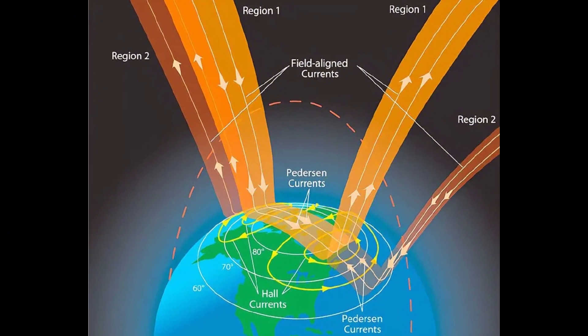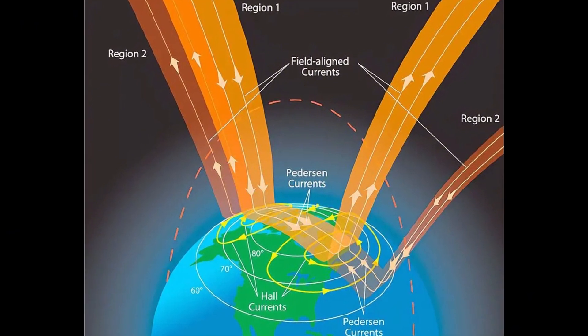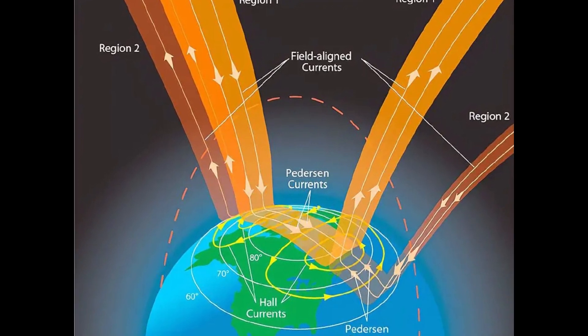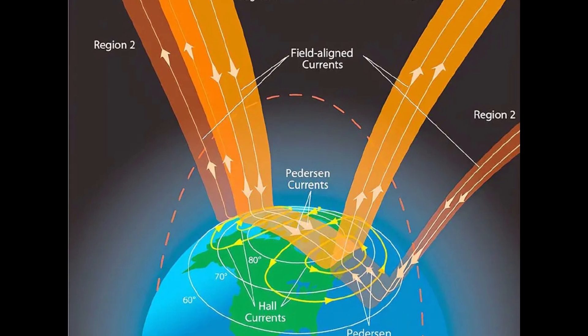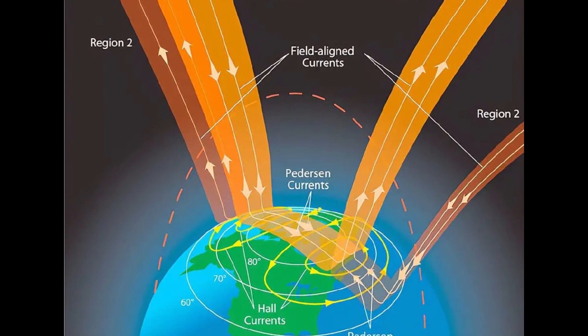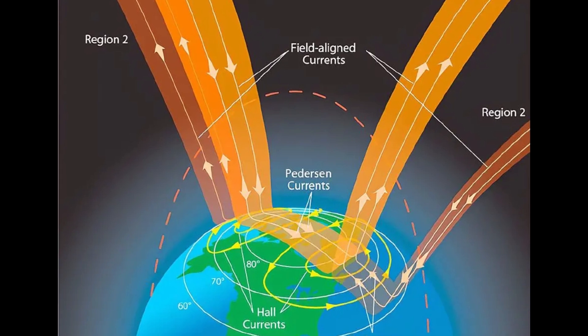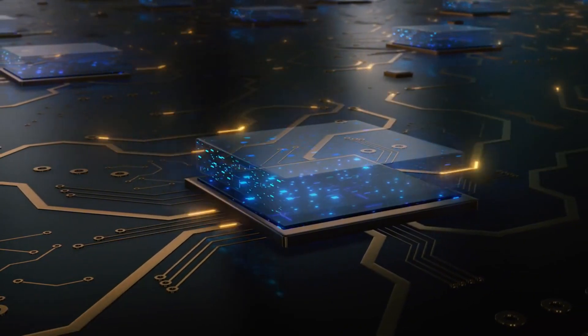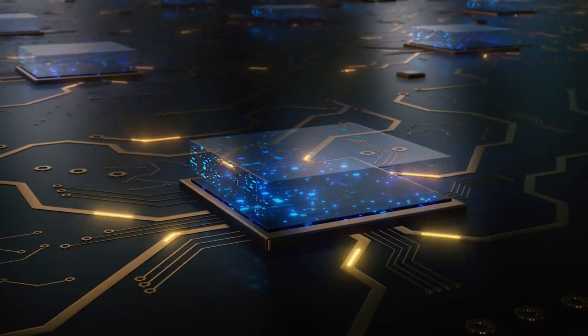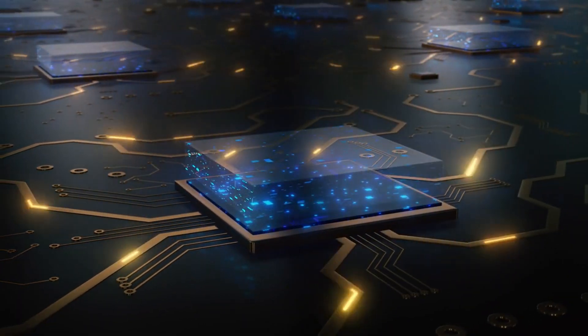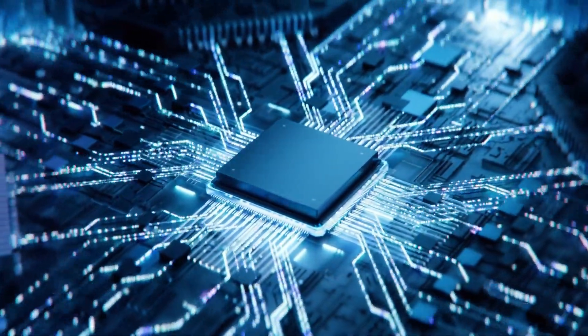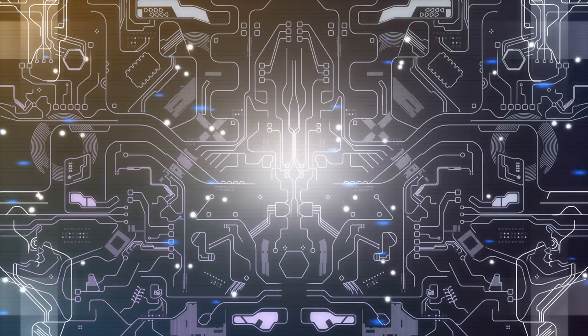Region 1 currents originate in the outer magnetosphere and flow along magnetic field lines into high latitude regions of the ionosphere on one side of Earth and out on the opposite side. Region 2 currents located slightly closer to the equator connect to the inner magnetosphere and complete the circuit, flowing in the opposite direction to Region 1. Together these paired currents form a complete circuit. One current goes down into the ionosphere and the return current flows back out into space.